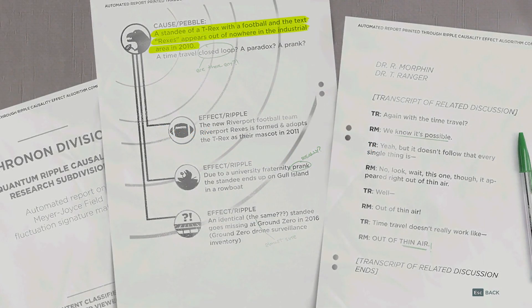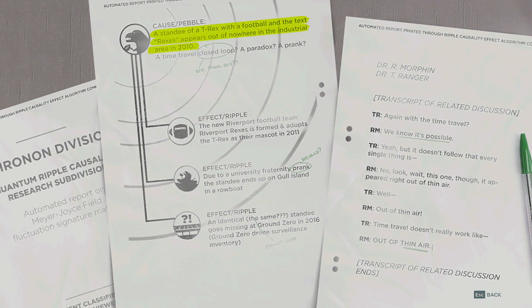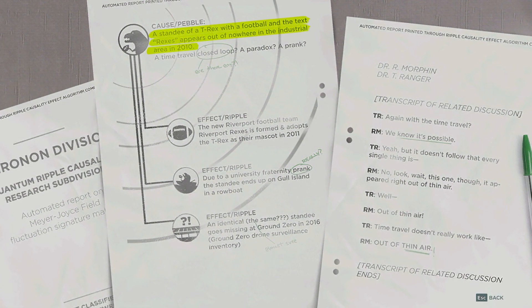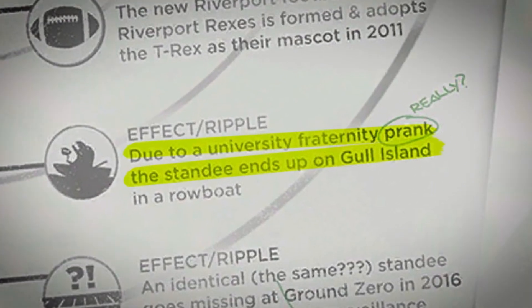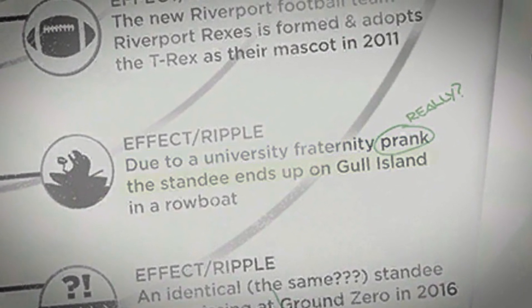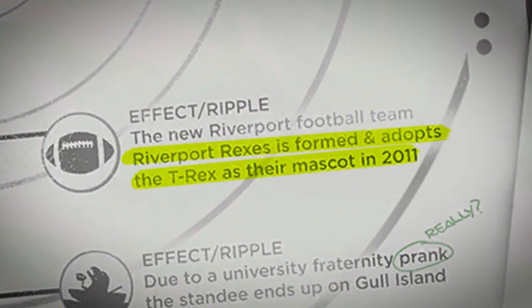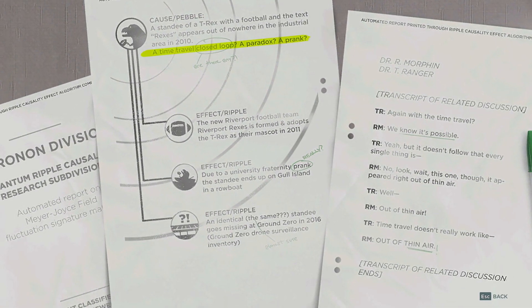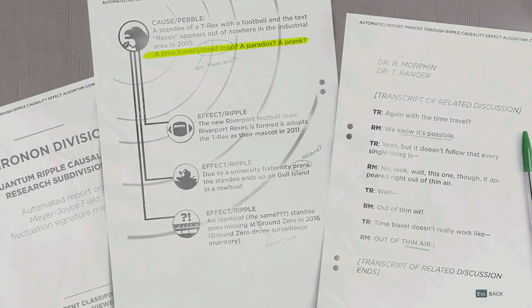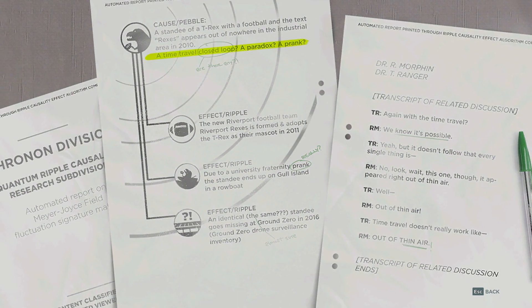Ripple 4: T-Rex Football Cutout. Nature of pebble: cutout for the Riverport Rexes appears out of nowhere in 2010. At the Ground Zero site in 2016, Jack interacts with one cutout and it vanishes. Due to the unstable nature of the location, it shifts back in time to 2010 and later appears on Gull Island. Dr. Morphin and Ranger believe it showed up on the island due to a university fraternity prank. The interesting point is that Riverport did not adopt the T-Rex as its mascot until 2011 — the appearance of this ripple is what caused the object to be made in the first place, creating a closed loop with no beginning or end. The research team questions if this constitutes a paradox. After all, who designed this cutout in the first place?